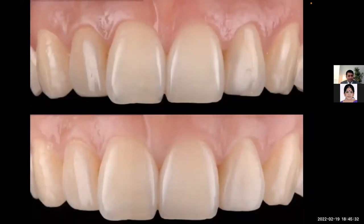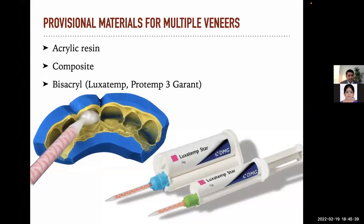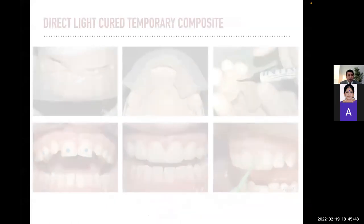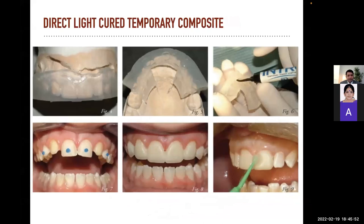For provisional materials for multiple veneers, you can use acrylic resin composite, Luxatemp, Protemp, Protemp-3, or Garant. There are also direct light-cured temporary composites. A water-clear silicone impression matrix material is used in a disposable tray without adhesive over the diagnostic wax-up to create the matrix for temporalization of the preparation. An affinity crystal silicone impression over the diagnostic wax-up clearly shows the underlying model, facilitating precise placement.